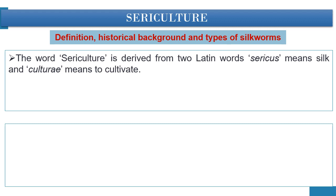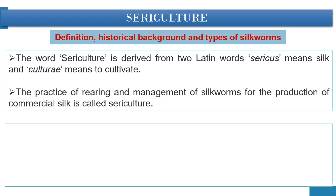So what is sericulture and silk? The production of silk from the silkworm by rearing practices on a commercial scale is called sericulture. The word sericulture is derived from two Latin words: sericus meaning silk and culture meaning to cultivate. On the other hand, the animal fiber silk is a protein fiber produced by silkworm consisting of two types of proteins, namely silk fibroin and silk sericin.